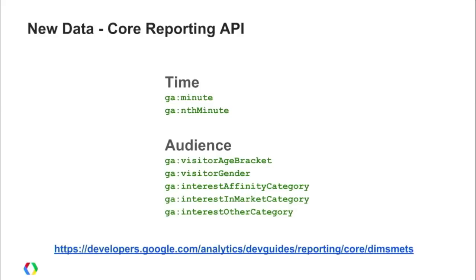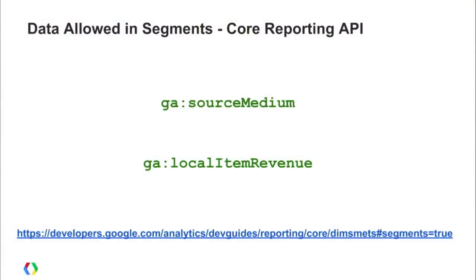Minute-level data was also released in the front-end web interface first, and then through the API a few days later — it's available in both places. We've also enabled segmentation for a few items: source/medium, a relatively new dimension that's a concatenation of source and medium, is now allowed in segments. Local Item Revenue is also now allowed in segments. Not all dimensions and metrics can be used in segments — use the Dimensions and Metrics Explorer, where you can filter by a checkbox to see which ones are allowed in segments.